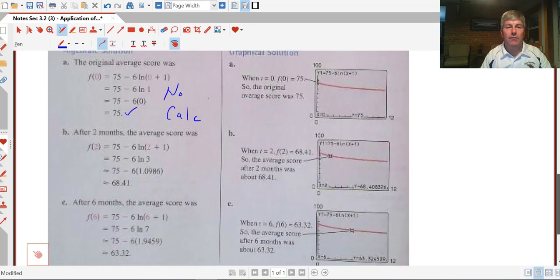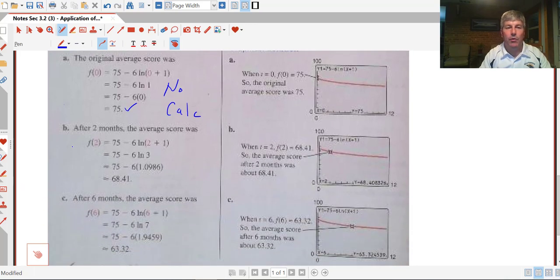After 2 months and after 6 months, simply put in 2 into your function. We get 75 minus 6 times the natural log of 3. We don't know what the natural log of 3 is, so we can't do this one in our head.